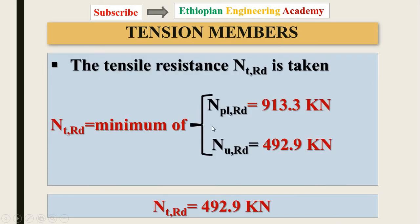The tensile resistance is taken as the minimum of the plastic resistance and the ultimate resistance. In today's video we covered two examples: Example 5 with an equal angle section, and Example 6 with an unequal angle section. In the next video I will share another working example on tension members. Like and subscribe for more videos — thank you for watching.